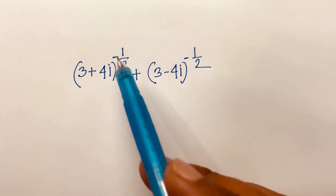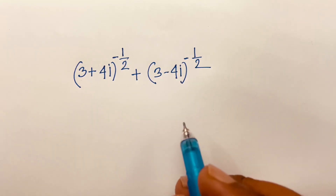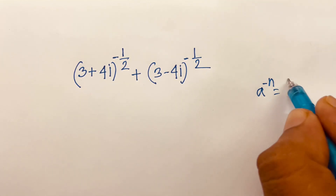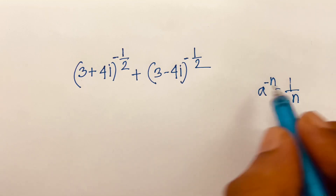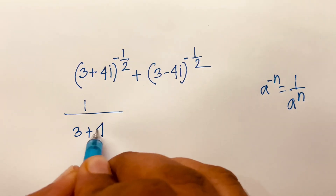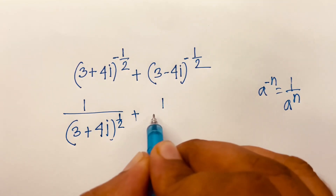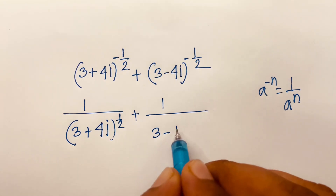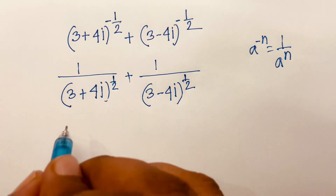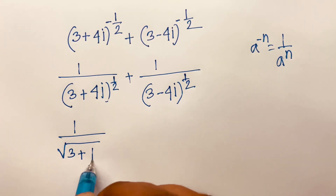How to solve (3 + 4i)^(-1/2) + (3 - 4i)^(-1/2). First, a to the power minus n equals one over a to the power n. According to this, we get one over (3 + 4i)^(1/2) plus one over (3 - 4i)^(1/2), which becomes one over square root of (3 + 4i) plus one over square root of (3 - 4i).